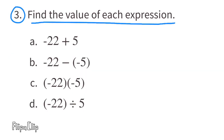Problem number three: find the value of each expression. Part a: negative 22 plus 5. We have more negatives than positives, so the answer will be negative. The difference between 22 and 5 is 17, so negative 22 plus 5 equals negative 17.